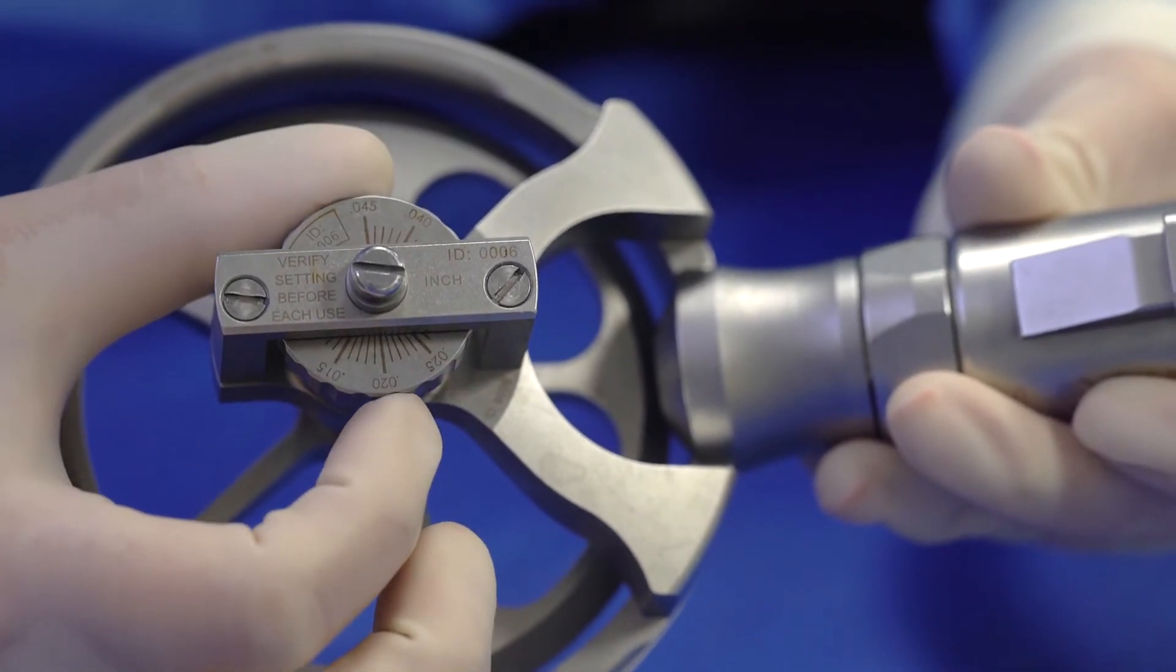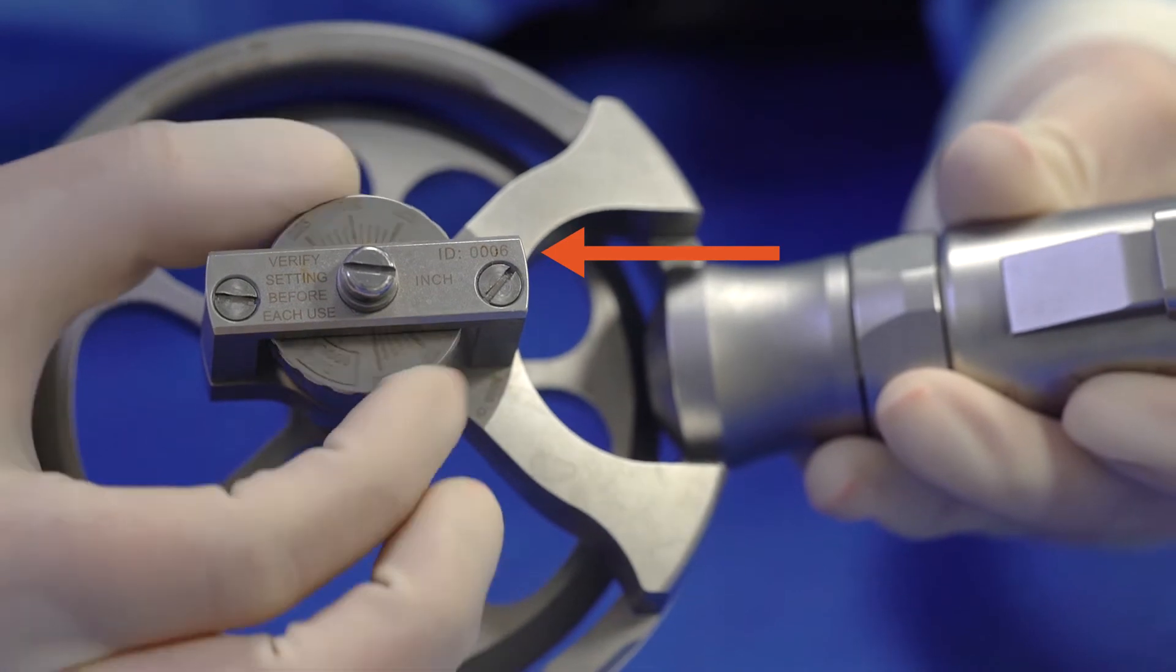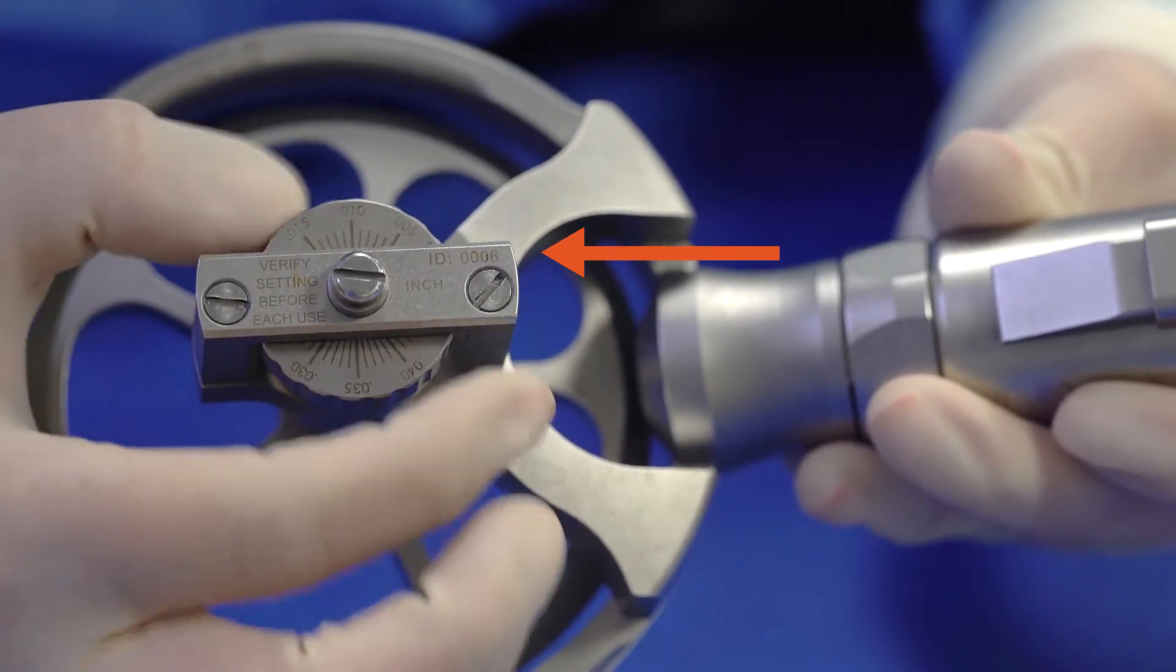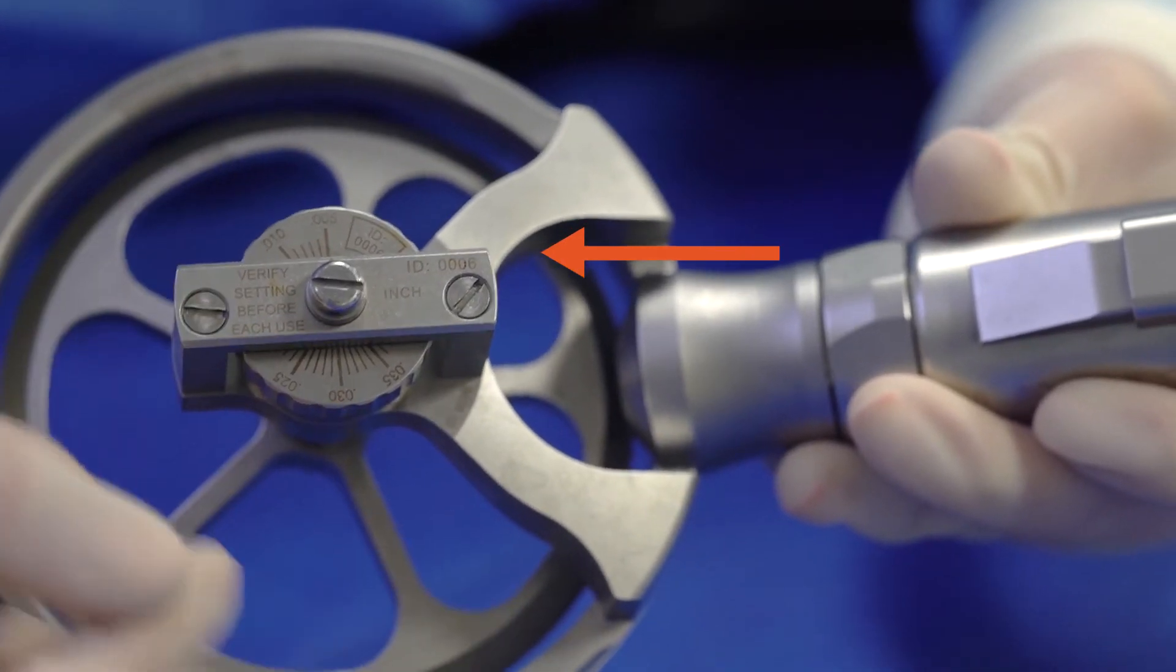You'll also see an internal marking on the cutting head stamped with an ID number. However, this is only an internal reference number for Xerco and is not part of the operation of the cutting head.